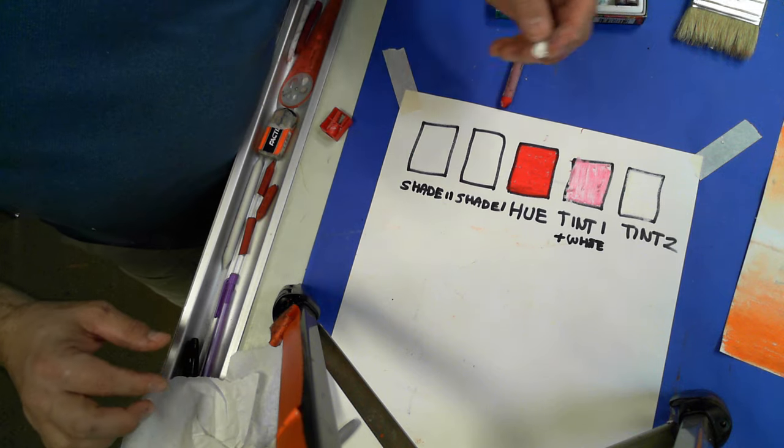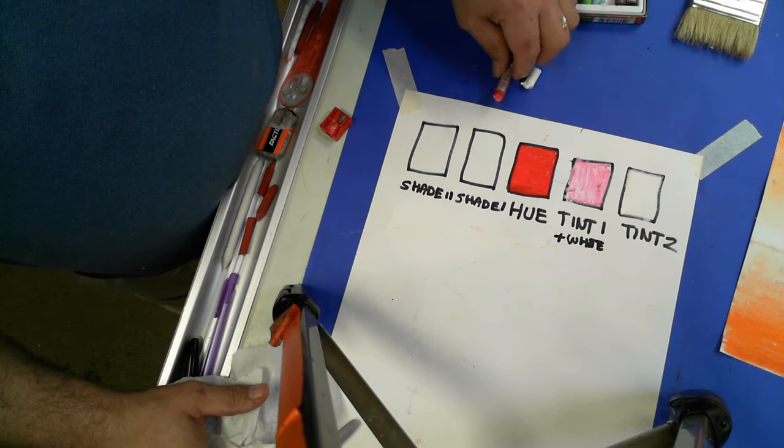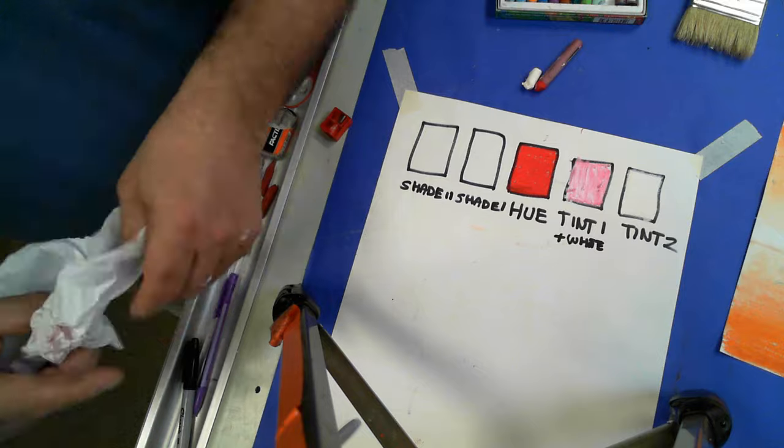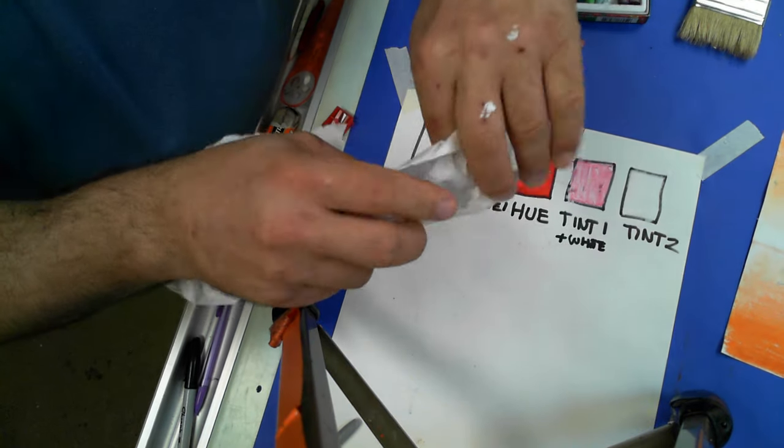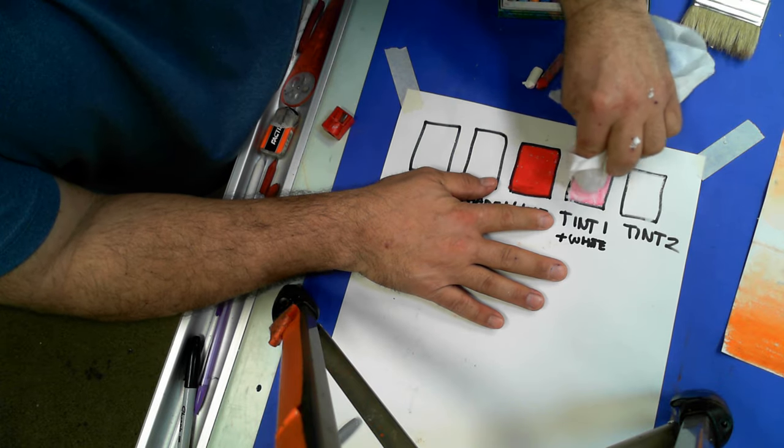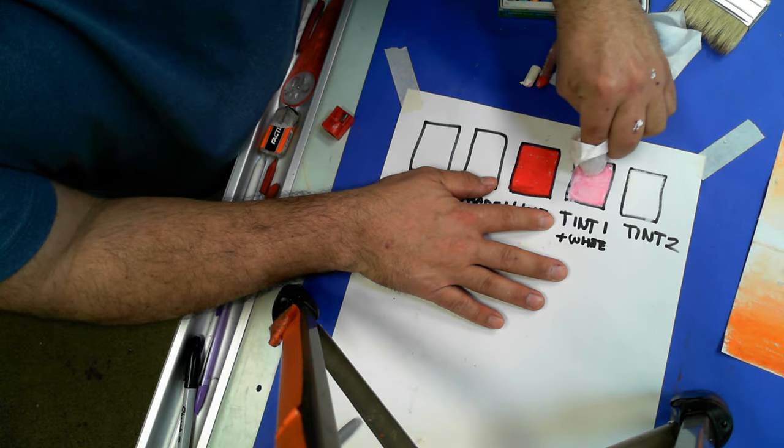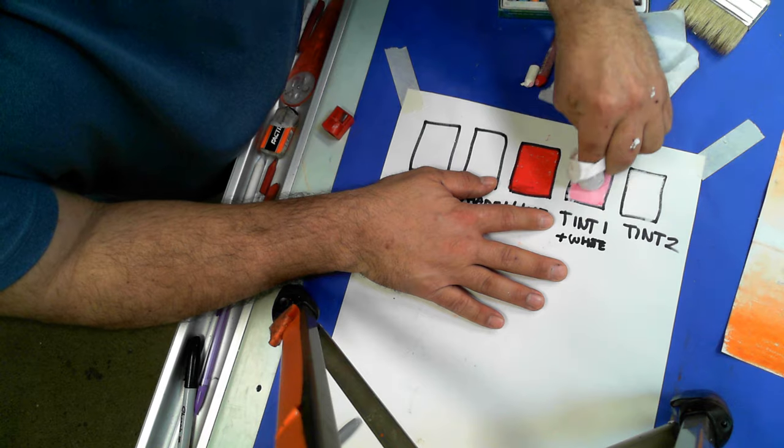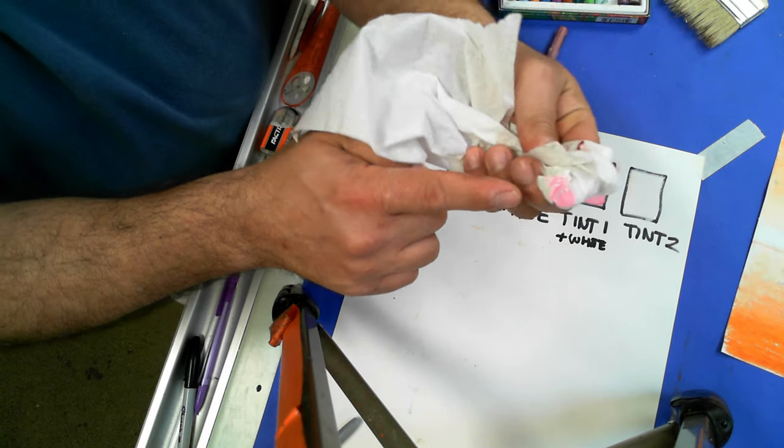And remember, you can always pause the video here if it's not working out the way you want. So I'm going to wrap a paper towel around my finger. And then I'm going to blend this color and go in a circular motion. Filling in.